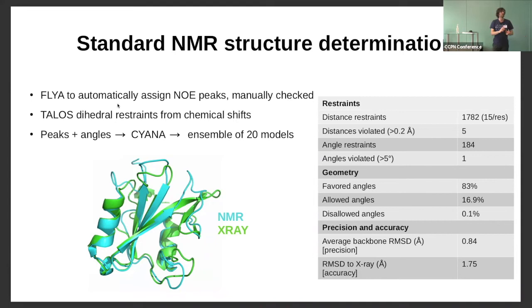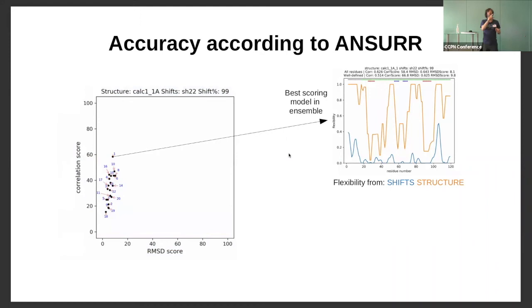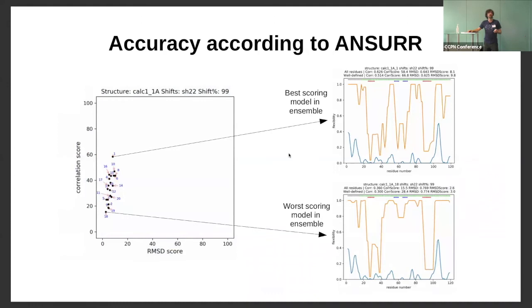So what does ANSWER have to say about it? We compute two scores which you can visualise on a 2D figure — the best scoring structures are in the top right and the worst in the lower left corner, which is where all 20 of our models are. So according to ANSWER, our structure is rubbish. Looking at the underlying data for the best scoring model, in blue we have the flexibility computed from the chemical shifts and in orange the flexibility computed from the model. Some peaks are in the right place, but the whole model is just completely too flexible. The worst scoring model is even worse.